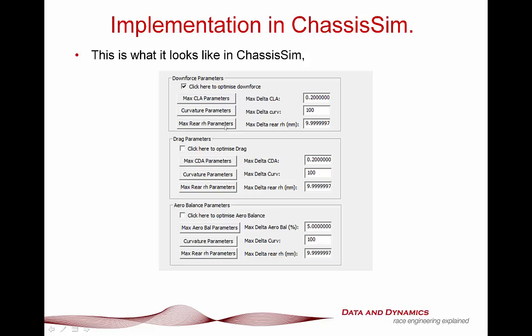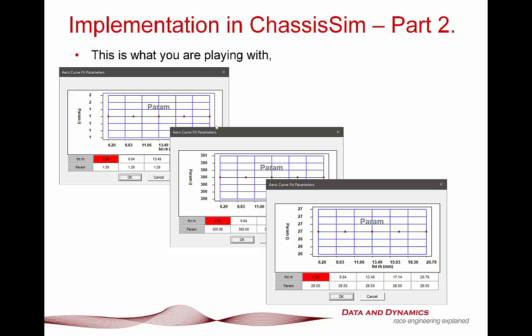We do exactly the same thing with the rear right-height parameters — we specify an initial right-height envelope guess and then a delta to look for. We do this for downforce, drag, and aero balance. To show you what this looks like in ChassisSim: here's our CLA parameter, with our front right-height envelope, the CLA parameter, the curvature parameter, and the rear right-height variation parameter. That's effectively how these pieces fall into place.